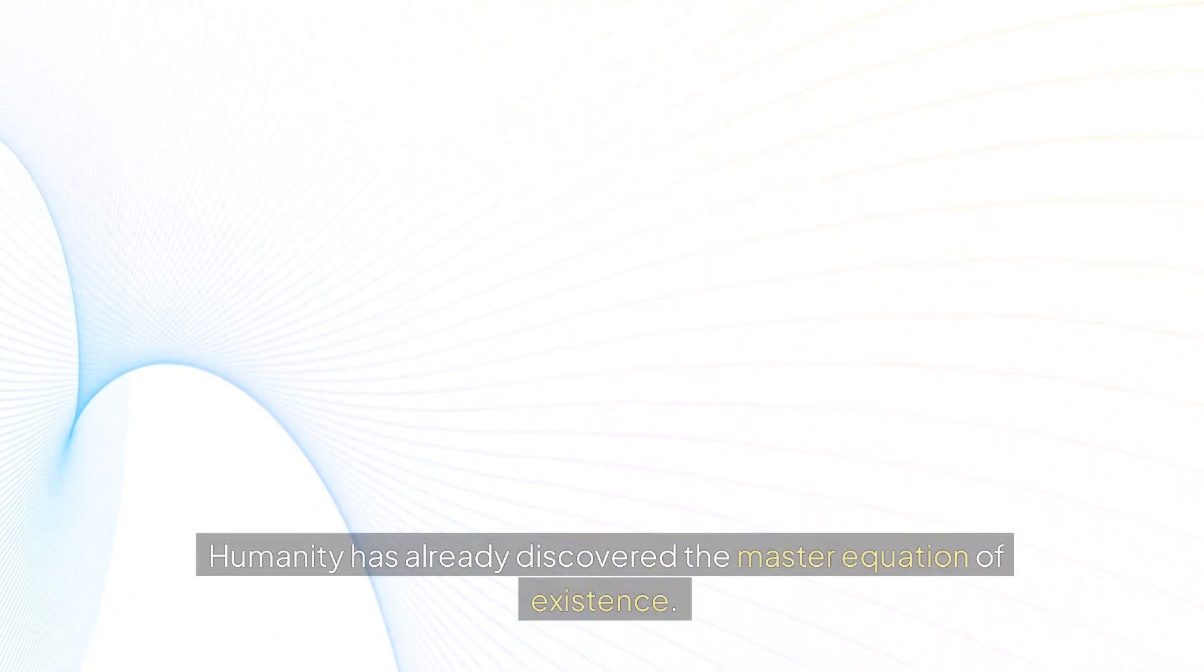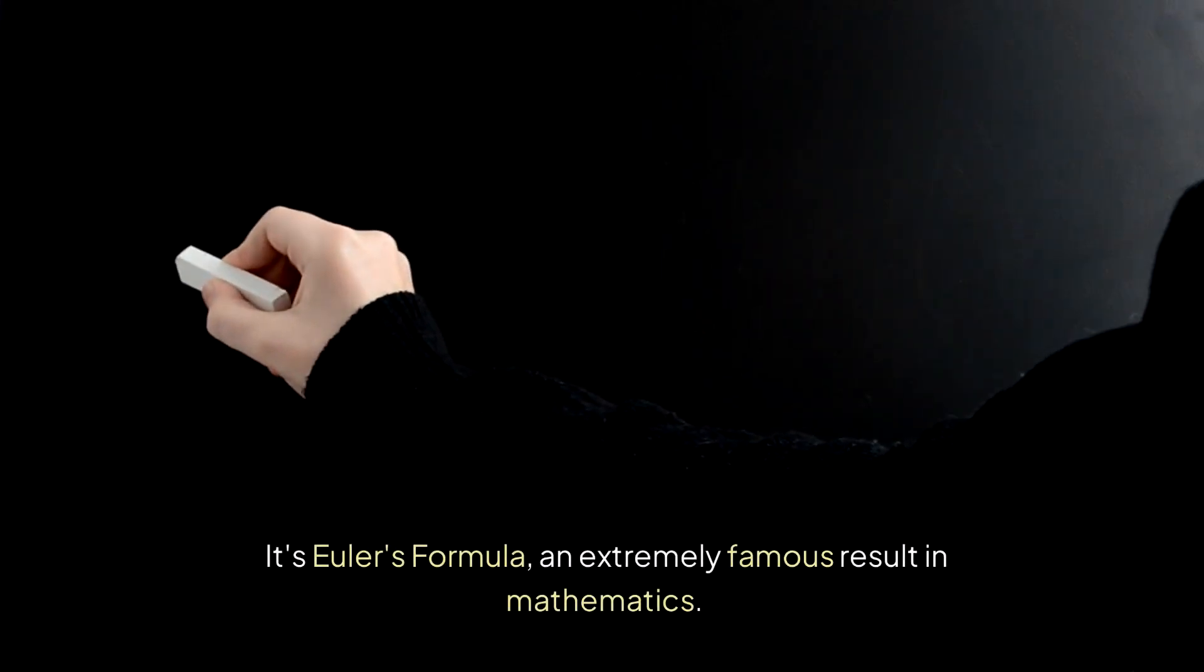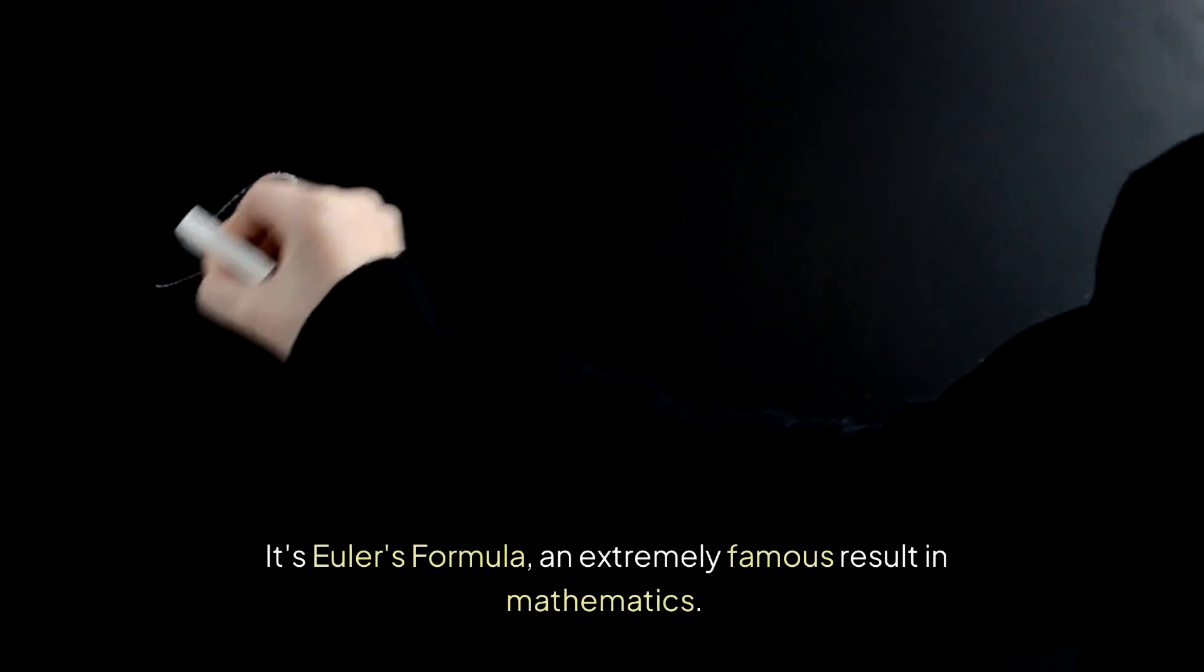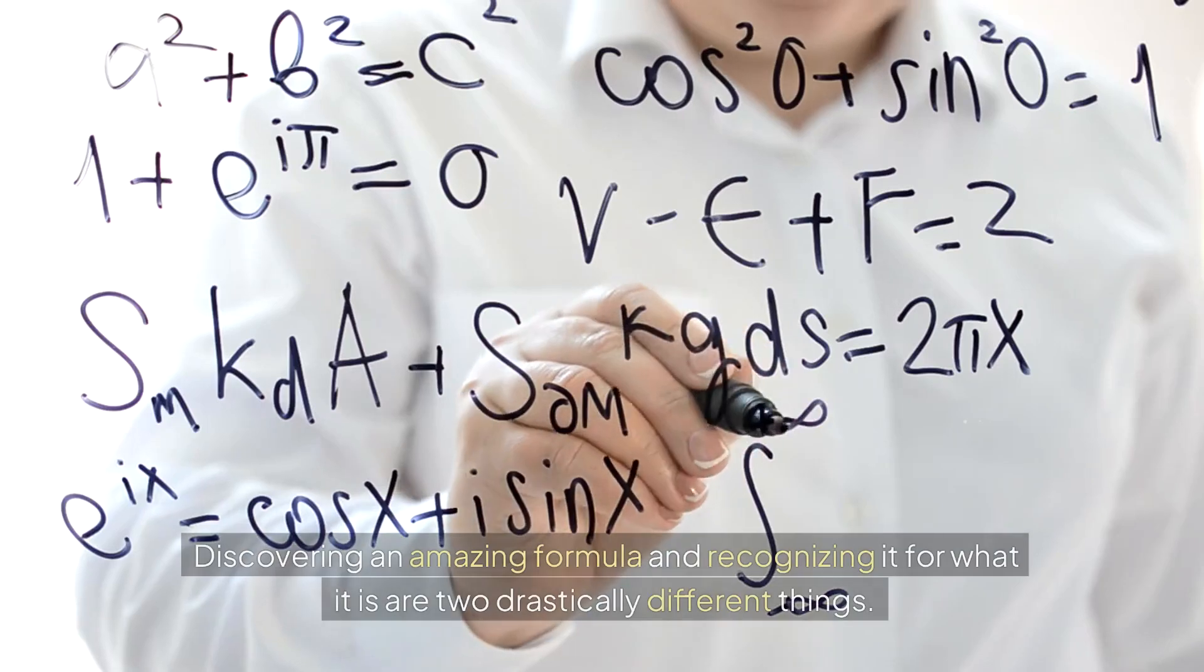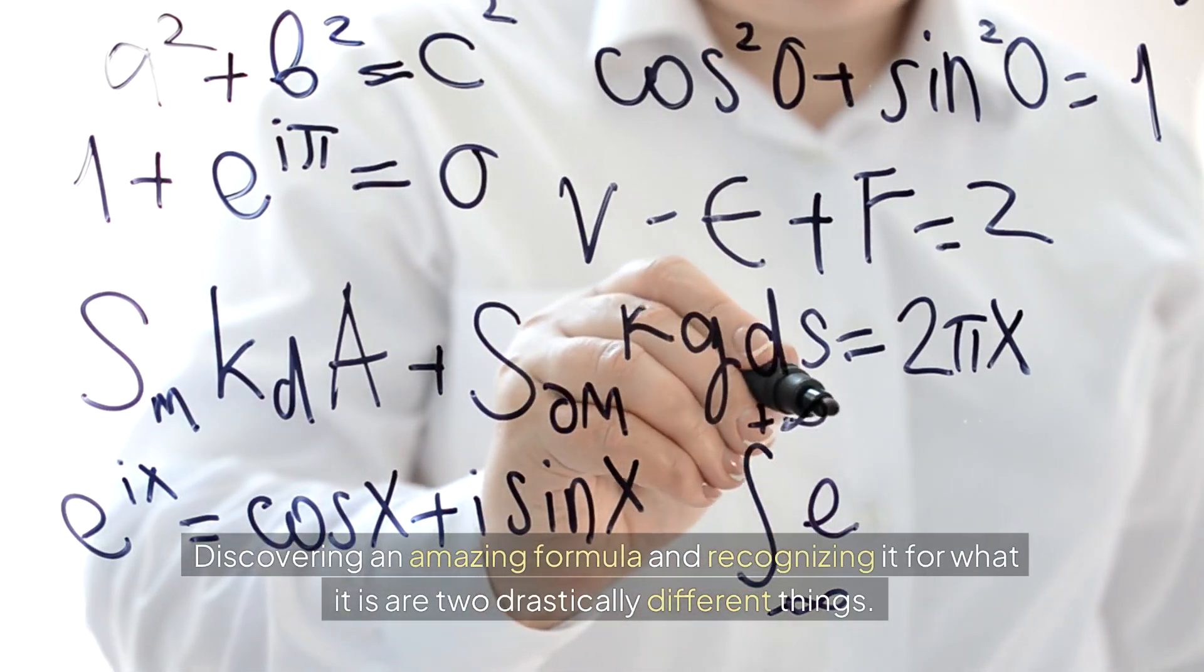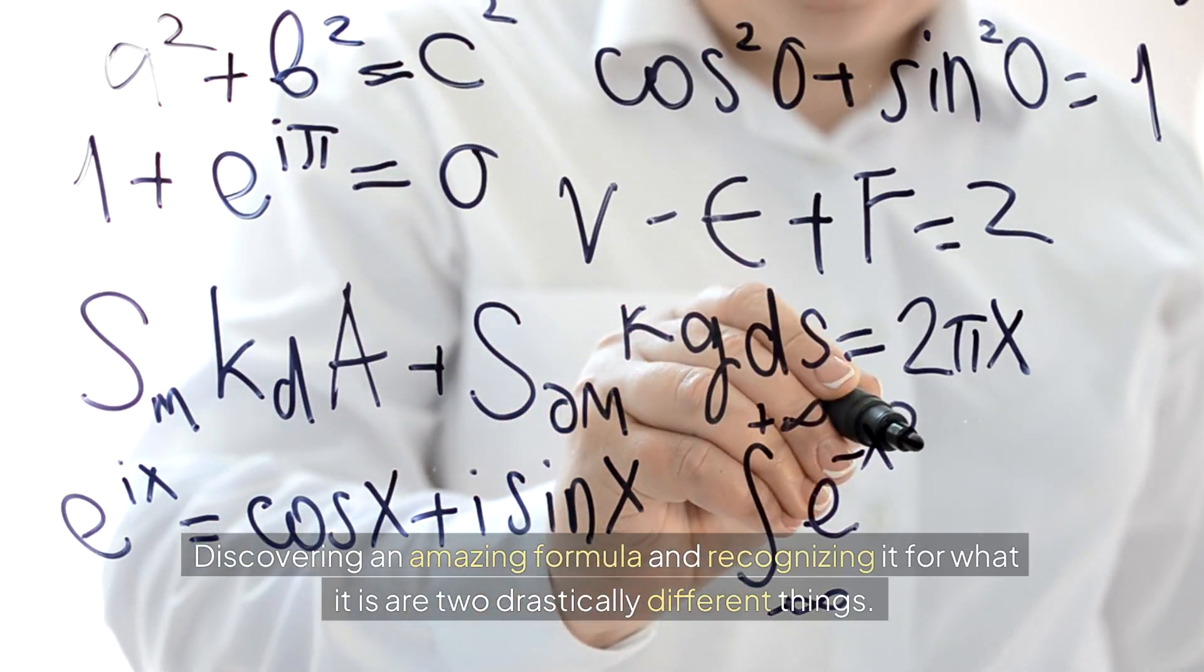Humanity has already discovered the master equation of existence. It's Euler's formula, an extremely famous result in mathematics. Discovering an amazing formula and recognizing it for what it is are two drastically different things.